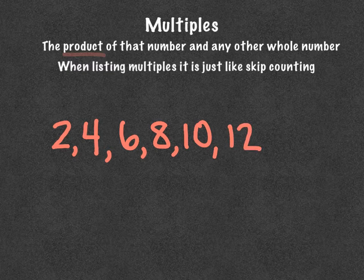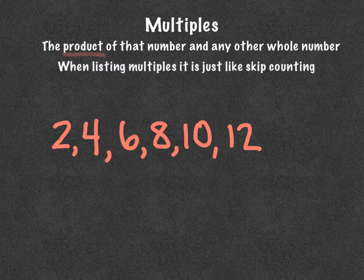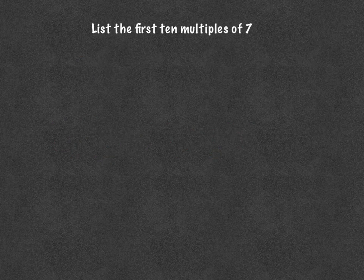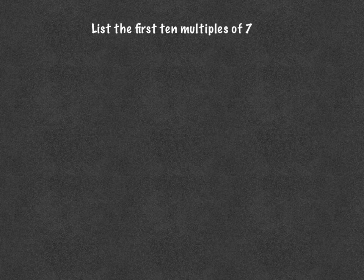Now there's an infinite number of multiples for each number because you could multiply that number times anything, all the way up through a million, ten million, a billion, a trillion. So there's an infinite number of multiples. Most of the time when you see this, it'll ask you to list the first ten multiples of a number or list the first five multiples of a number.